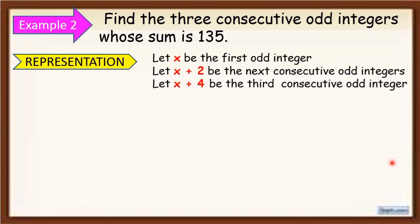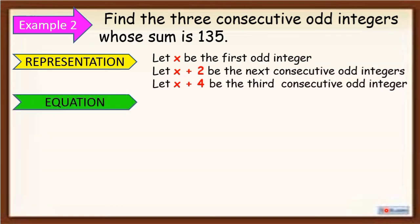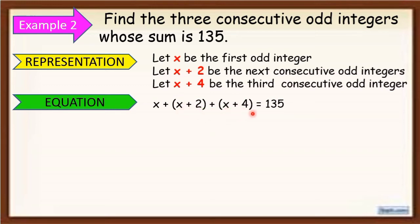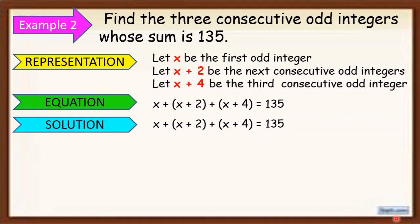We let x plus 4 be the third consecutive odd integer. So we now have three representations: x for the first number, x plus 2 for the second, and x plus 4 for the third. Now we make an equation. Since it's a sum, we add the three: x plus x plus 2 plus x plus 4 is equal to 135.